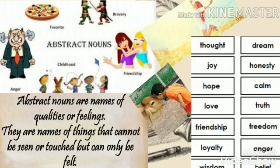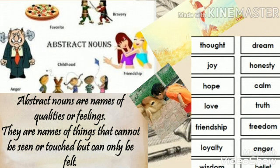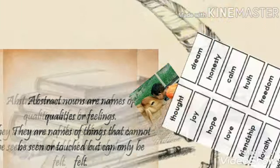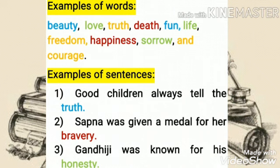Let's move to the next one — it's a very interesting one among the nouns. Definition of abstract nouns. Abstract nouns are names of qualities or feelings. They are names of things that cannot be seen or touched, but can only be felt. Listen carefully — they cannot be seen or touched, but can only be felt.